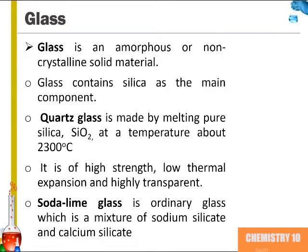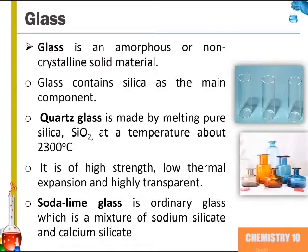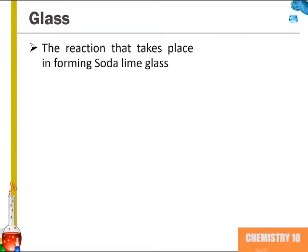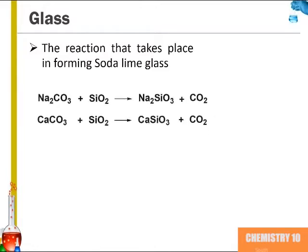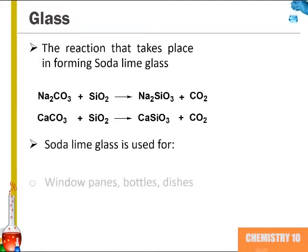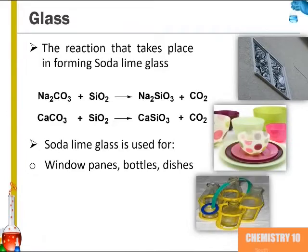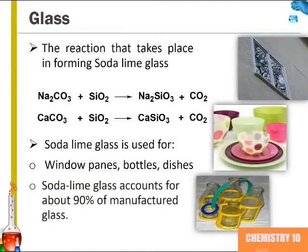Soda lime glass is ordinary glass, which is a mixture of sodium silicate and calcium silicate. The following reactions take place in the formation of soda lime glass: sodium carbonate and calcium carbonate combine with silicon dioxide to form silicates and carbon dioxide gas. Soda lime glass is used for window panes, bottles, and dishes, and accounts for about 90 percent of all manufactured glass.